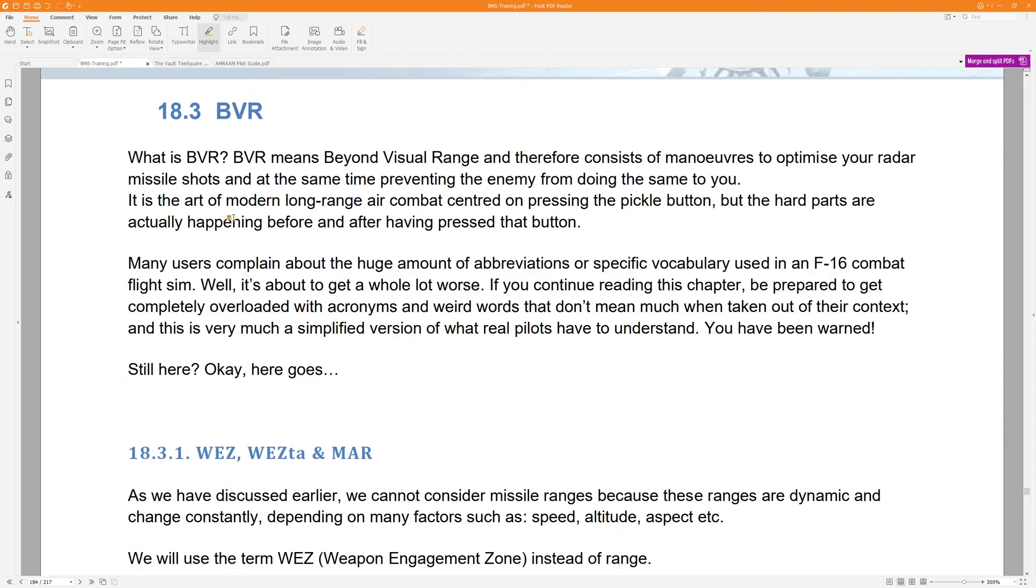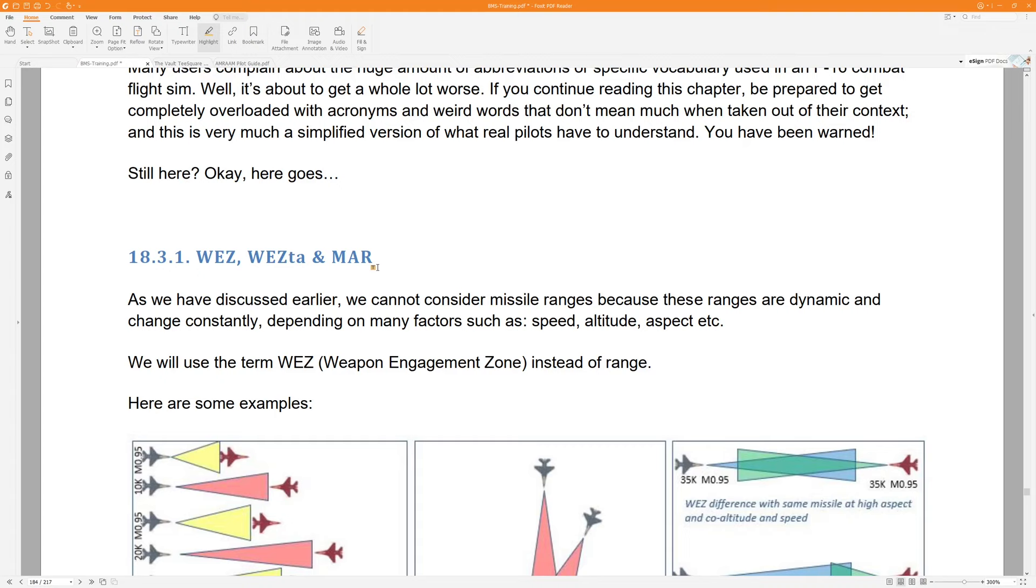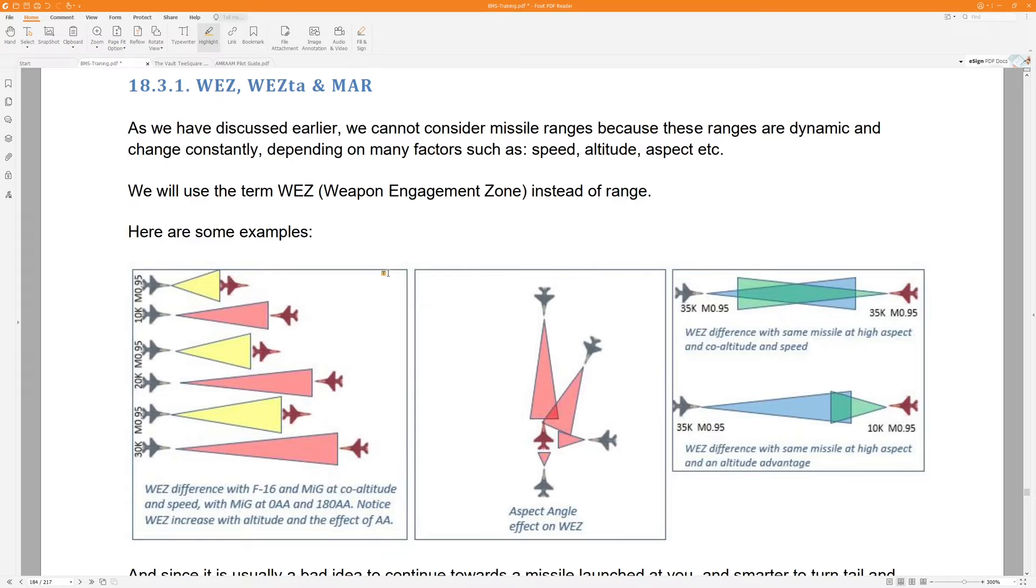But we will talk a little bit about the minimum abort range and the weapon engagement zone. We do have to know how close we can get to ensure a high probability of kill of our missile without putting ourselves at the same risk from the enemy's missile. So we're going to learn three quick acronyms here, the WEZ, the WEZ-TA, and the MAR. Weapon engagement zone, weapon engagement zone tail aspect, and minimum abort range.